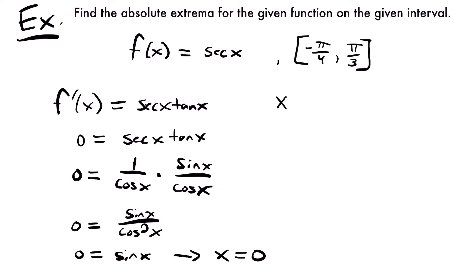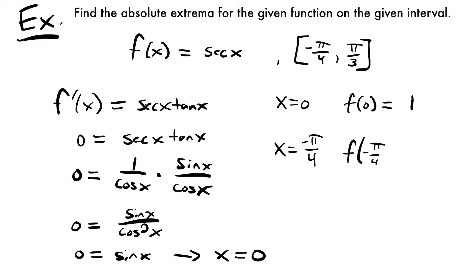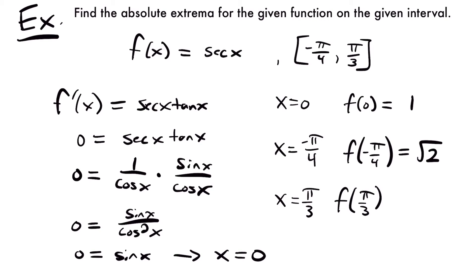So we have critical number x equals 0 and two endpoints to check. Plugging zero into secant gives an output of 1. For our first endpoint x equals negative pi over 4, f of negative pi over 4 equals the square root of 2. For our last endpoint x equals pi over 3, plugging into secant x gives us 2.